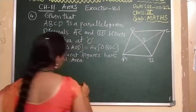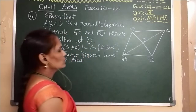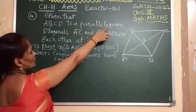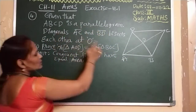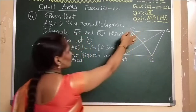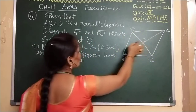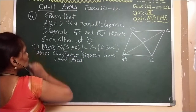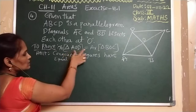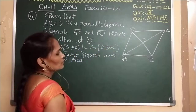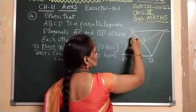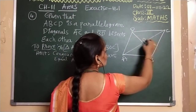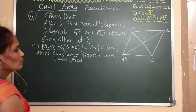Whatever is there in the question, I wrote on the board. This is the given figure. ABCD is a parallelogram. Diagonals AC and BD bisect each other at O. Now we need to prove that area of triangle AOD is equal to area of triangle BOC. These areas of the two triangles are equal — that we need to prove.